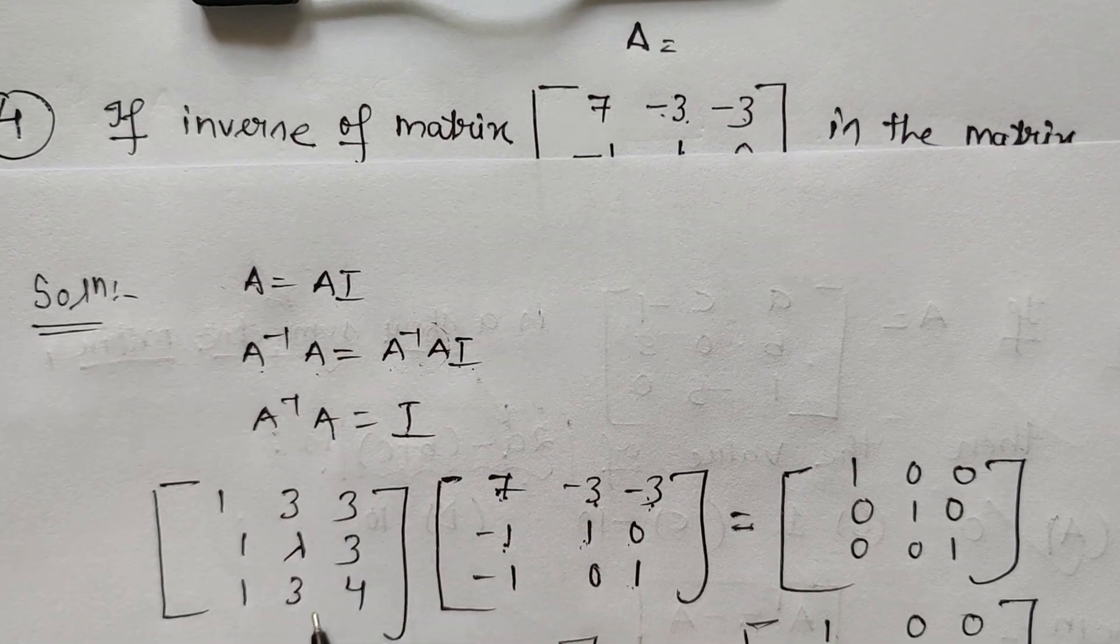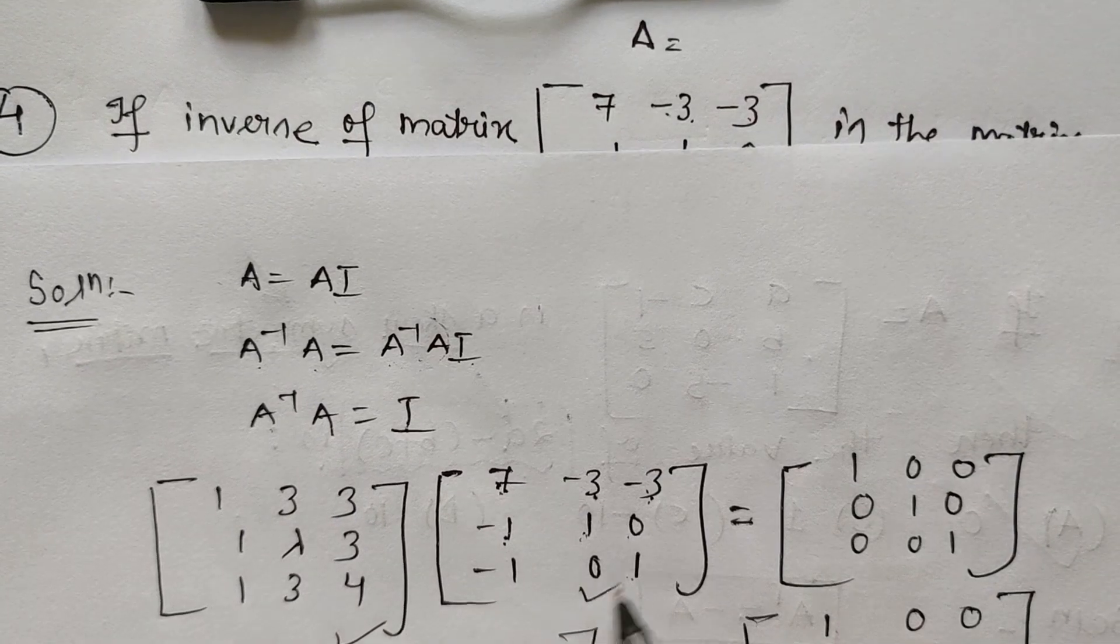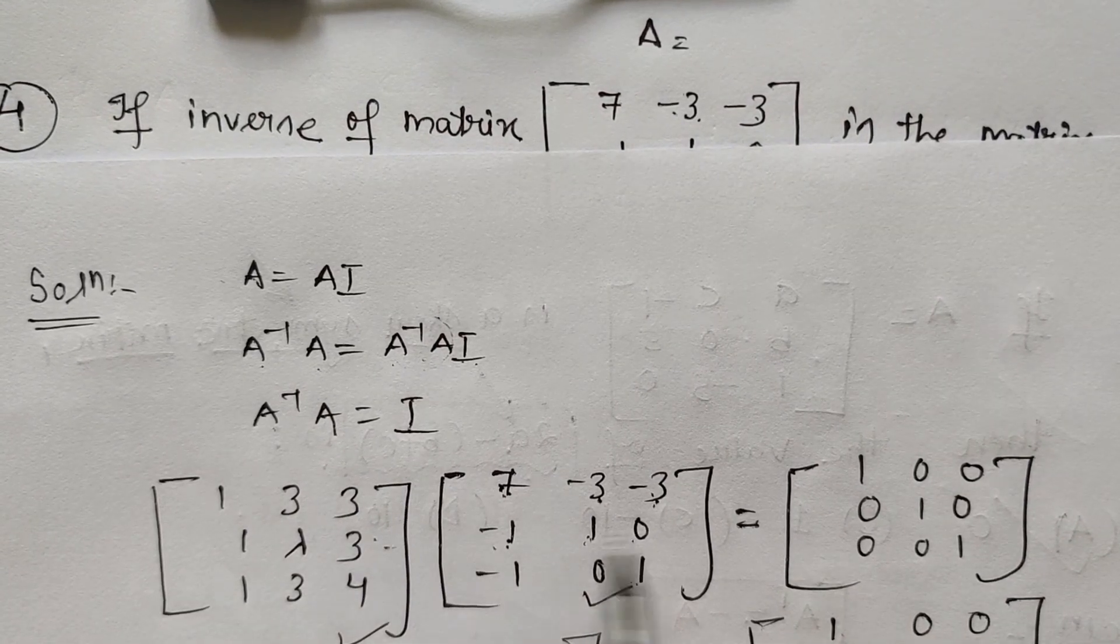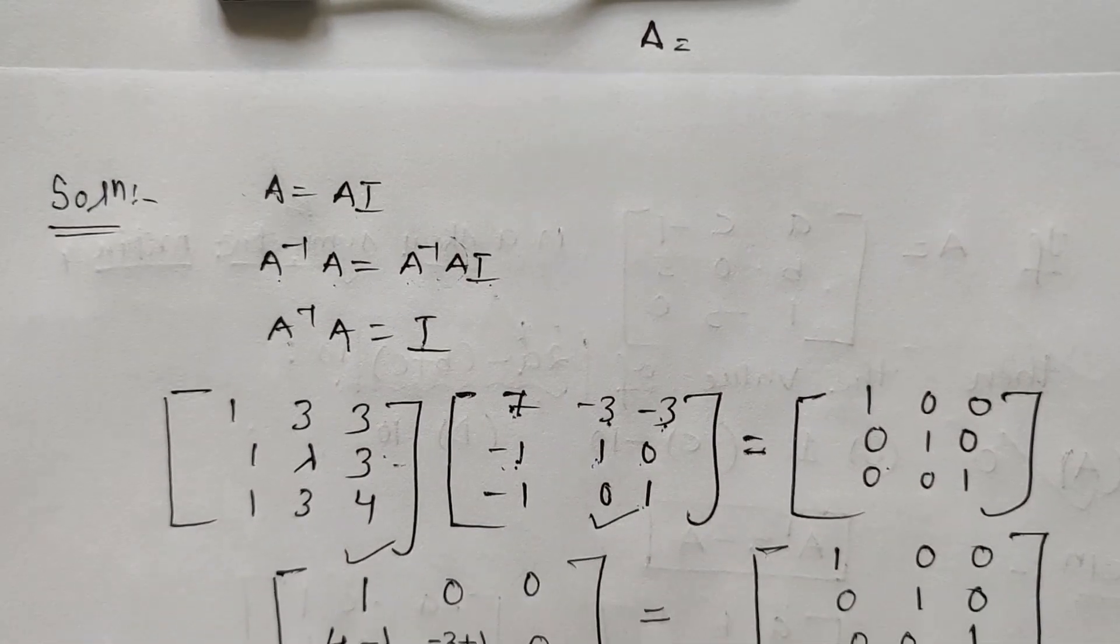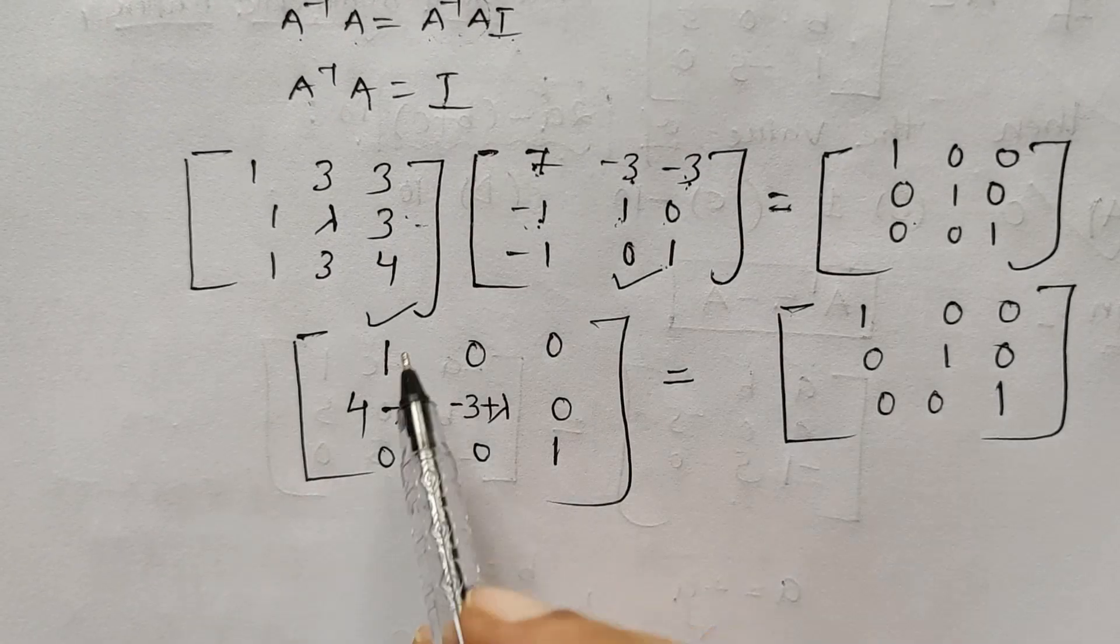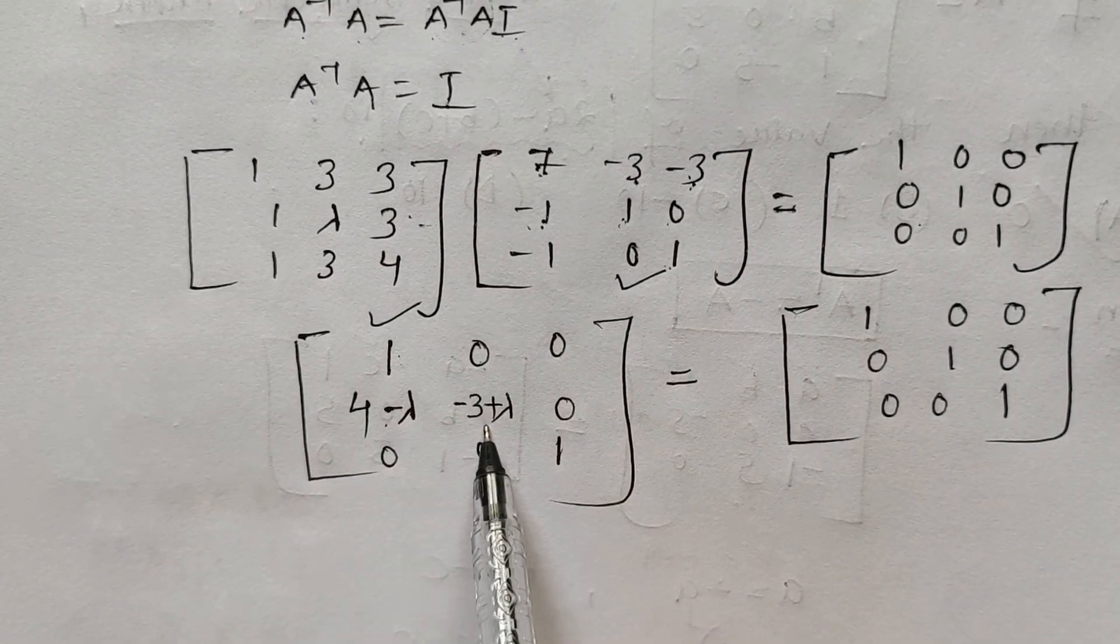When we multiply the matrices, I get [1, 0, 0; 4-λ, -3+λ, 0; 0, 0, 1]. What does it mean? It means that the corresponding elements are equal when the two matrices are equal.